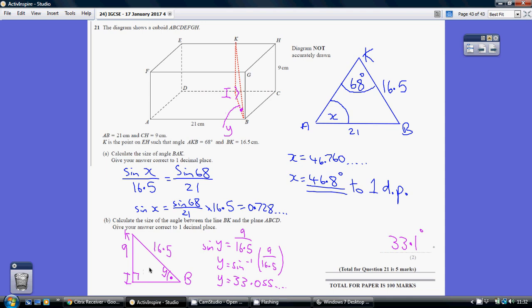Okay. We know the length KB is 16.5. We're told that in the question. I'm telling you that this angle KIB is 90 degrees. We know the length KI is the same as the length HC, which is just nine centimeters. And we're being asked to work out this angle here.